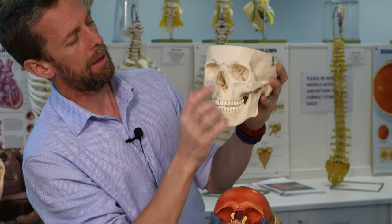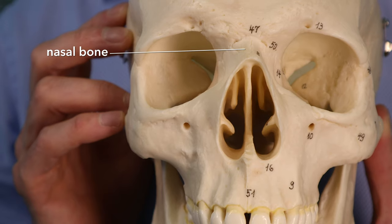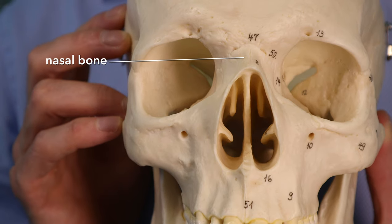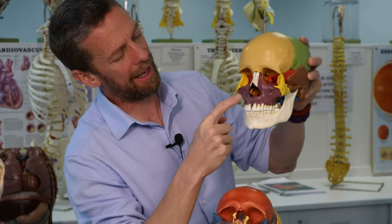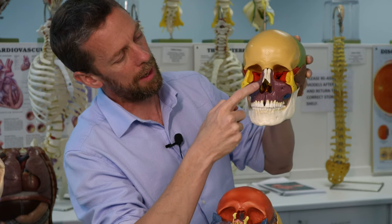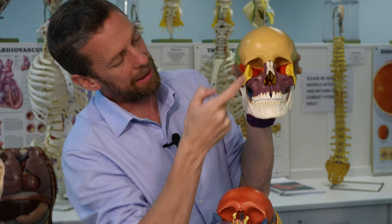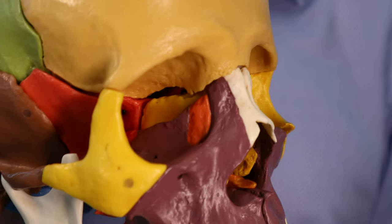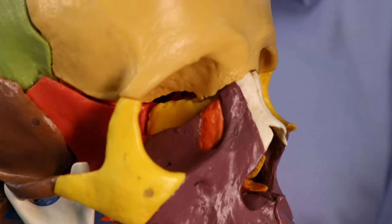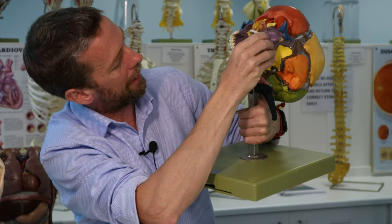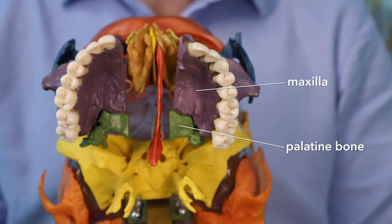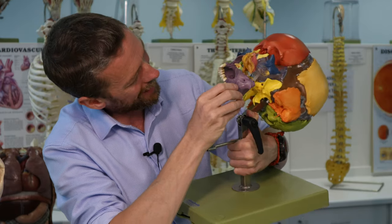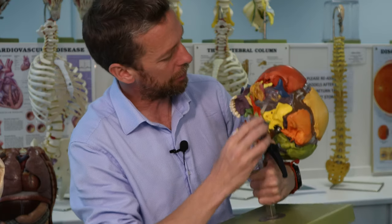It's a busy and complicated little area. The bones neighbouring the ethmoid include: nasal bones, frontal bone, maxillary bone, lacrimal bone, sphenoid bone. And as a bonus — the palatine bones, which form the posterior part of the hard palate, also push up against the ethmoid bone. The ethmoid bone is surrounded by a considerable number of bones, which is not surprising given its central nature.